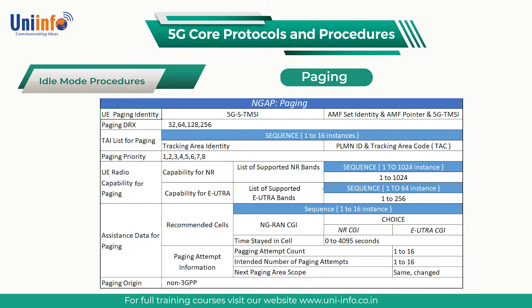The AMF is responsible for ensuring that the population of UEs are allocated 5G-TMSI values which evenly distribute the UEs across the set of paging frames and paging occasions. The 5G-S-TMSI is used instead